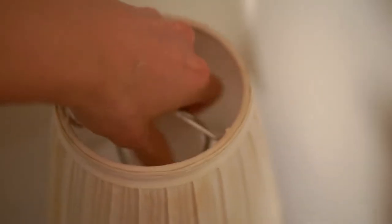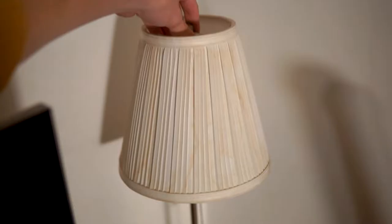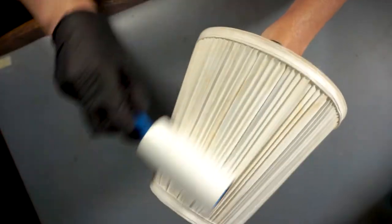In today's video, we are going to see how to clean a lampshade. Start by removing the lampshade from the lamp by unscrewing the bulb and the plastic ring that holds the lampshade in place.